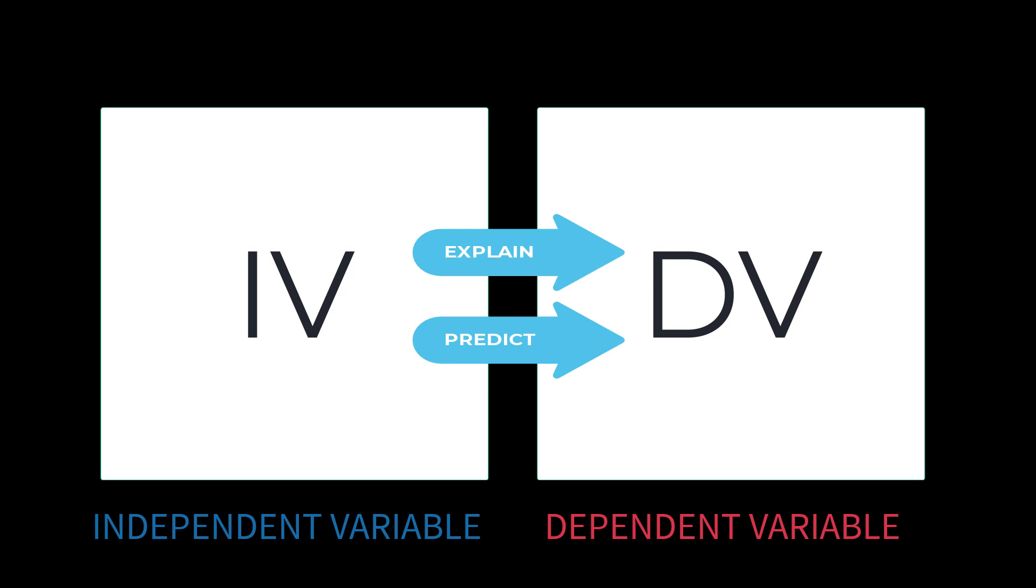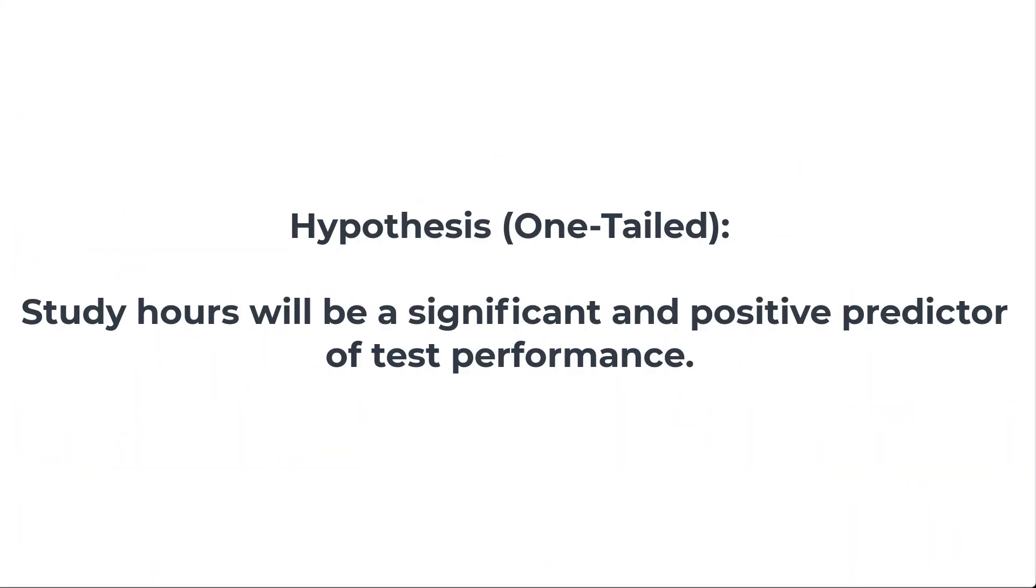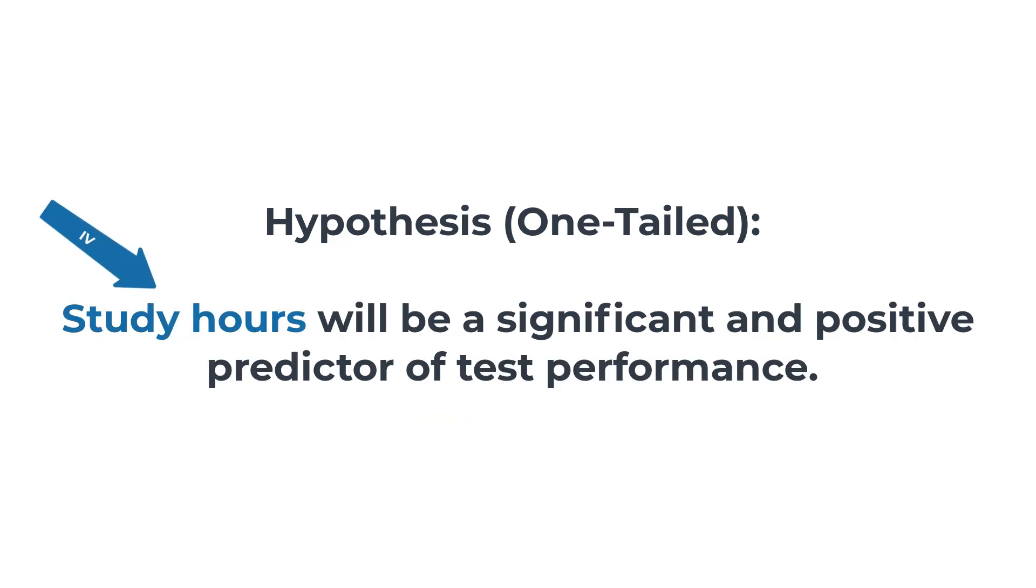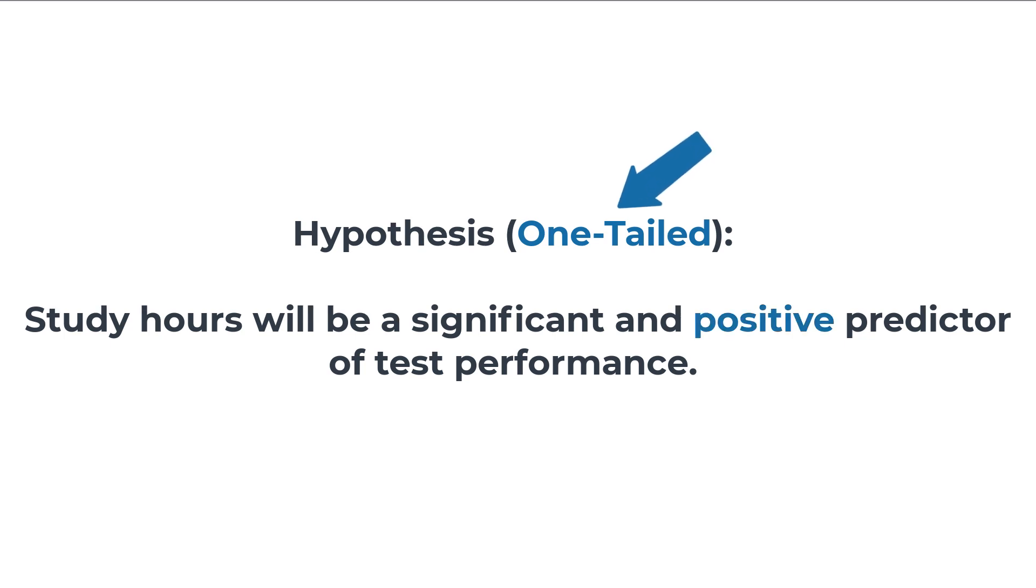Now let's look at two more examples where independent and dependent variables operate in relationship testing. Now even though this is a relationship test, our initial diagram has not changed. We are still looking at the independent variable and the dependent variable in terms of explaining and or predicting. Here is a one-tailed hypothesis: study hours will be a significant and positive predictor of test performance. Here we observe that the dependent variable is test performance. The independent variable is study hours. We have a one-tailed hypothesis because it's a specific positive prediction.